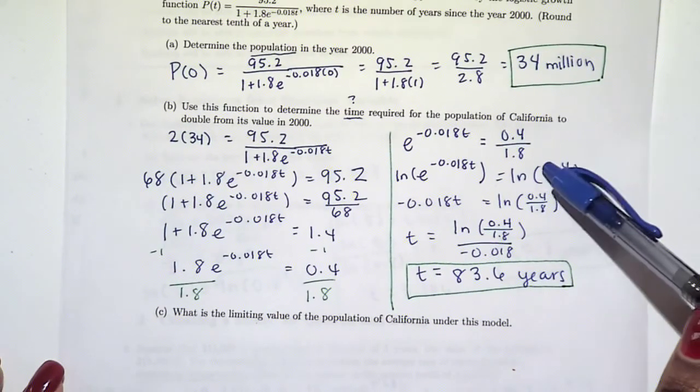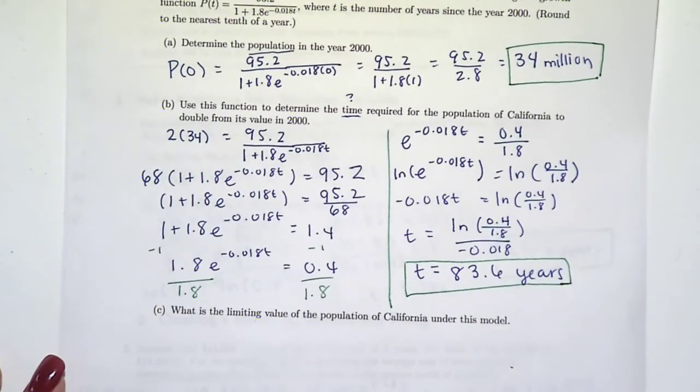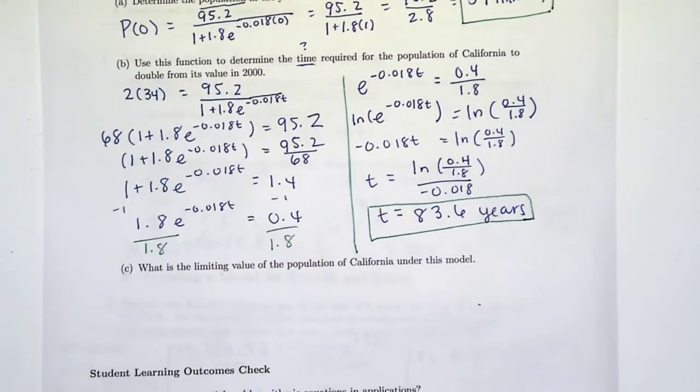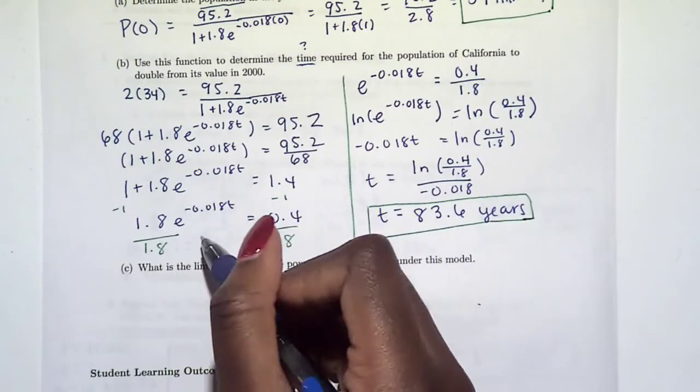So we have all of the techniques we needed to do this. Now here's an interesting question. Part c says, what is the limiting value of the population of California under this model? What does that even mean? Limiting value, we've never used this word. Limit is a calculus word, but we can understand what it means from this class.